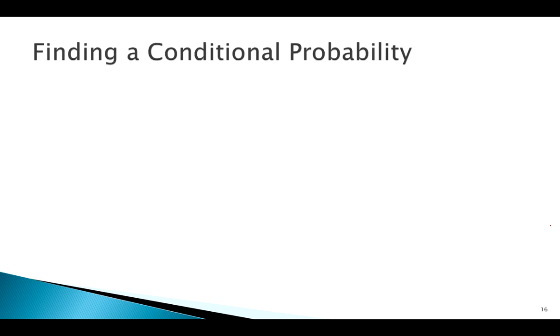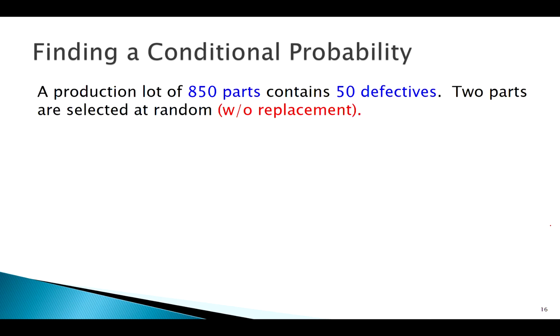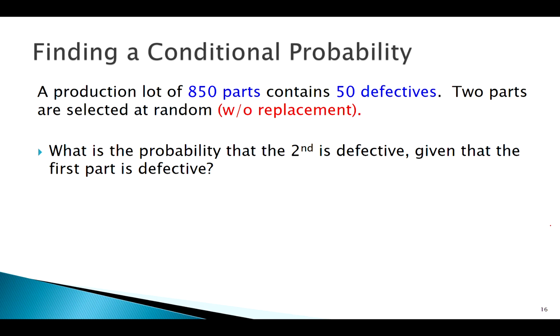Now as we move into the multiplication rule, let's think about how we might find a conditional probability. Say I'm manufacturing parts - there's 850 total, 50 are defective. Conditional probability would be something like: probability the second part we choose is defective given the first was defective.